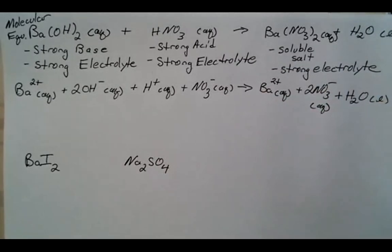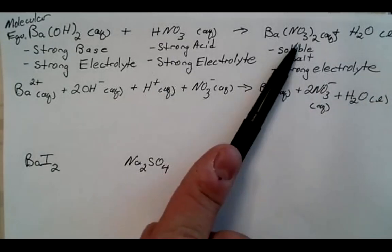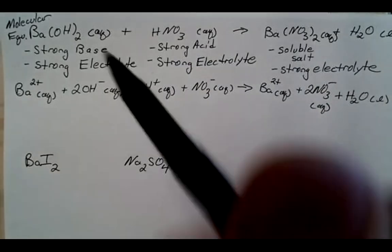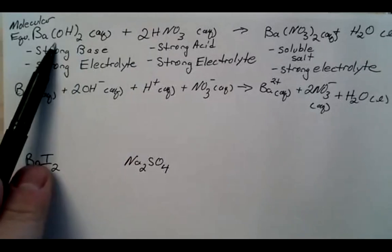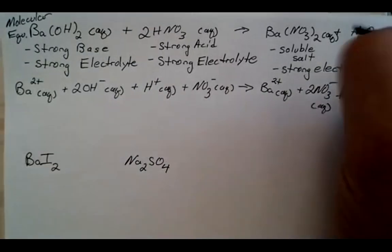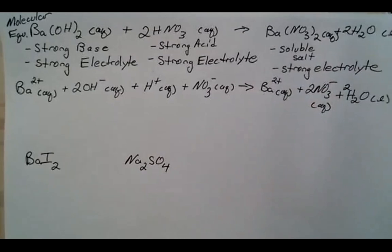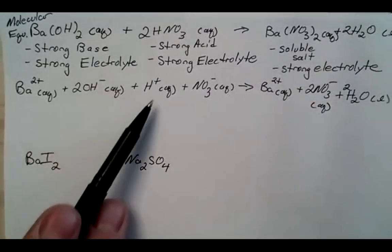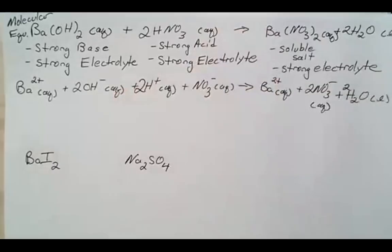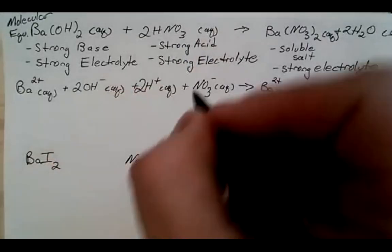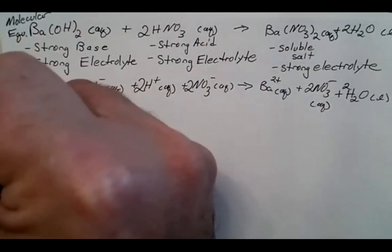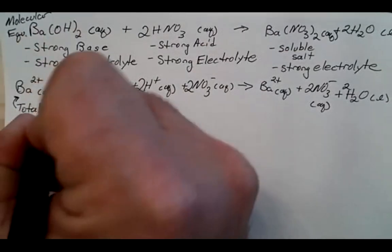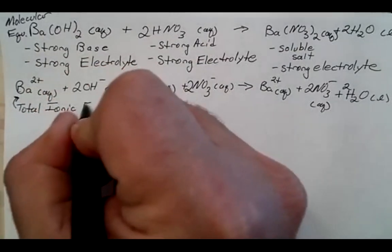To balance: we have two nitrates on the product side, so we need two nitric acids on the reactant side — giving 2 H⁺ and 2 NO₃⁻. We have 2 H⁺ and 2 OH⁻, so we need 2 waters. This is now our balanced total ionic equation.